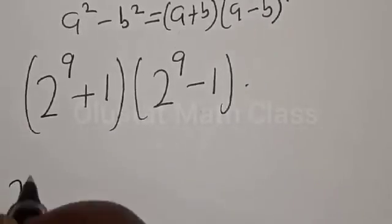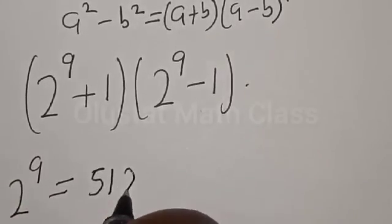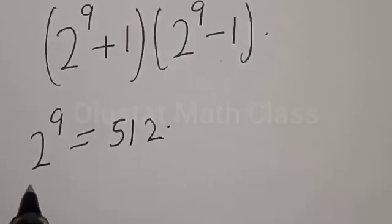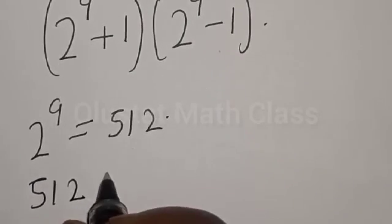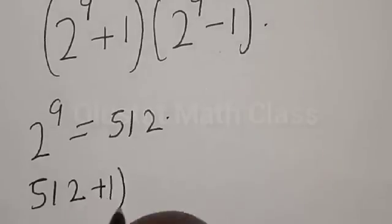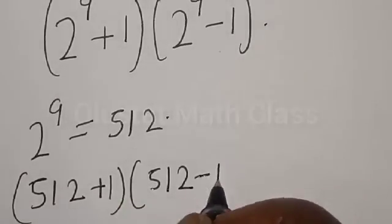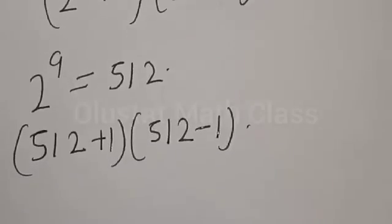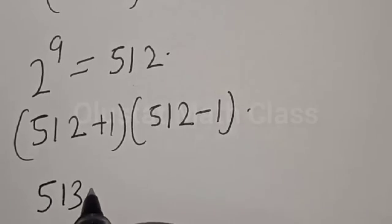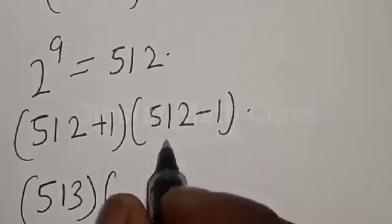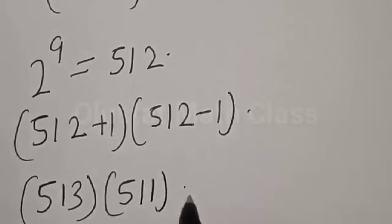Now 2 raised to power 9 is equal to 512. So 512 plus 1 is 513, multiplied by 512 minus 1, that is 511.